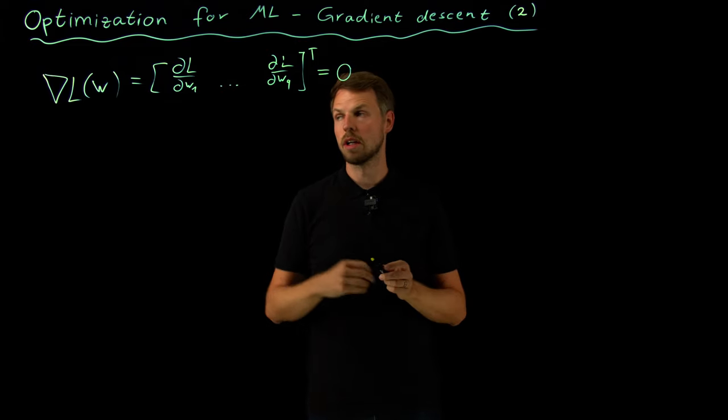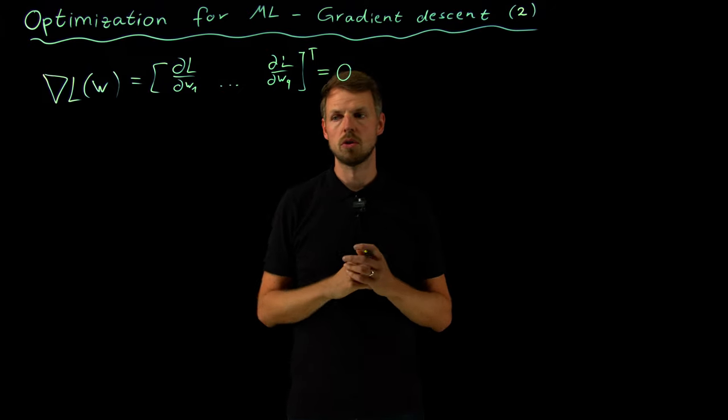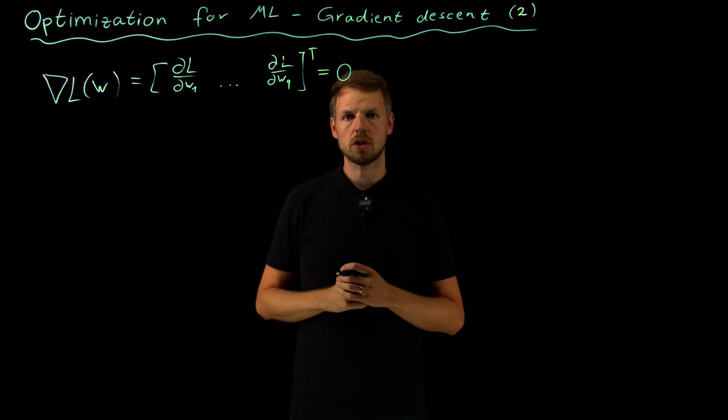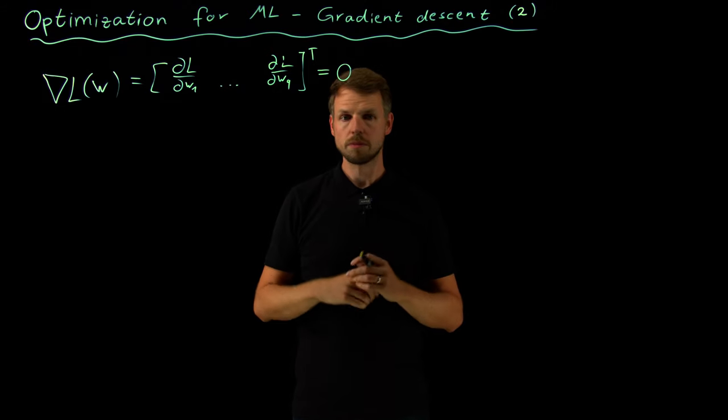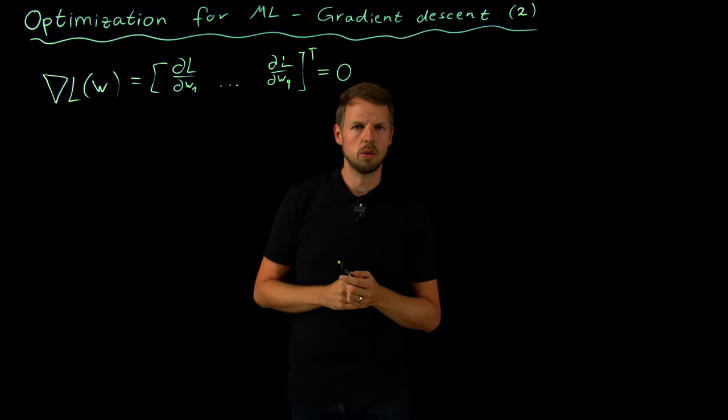So having a global criterion saying that w star, the optimal solution, has a smaller loss function than any other w is a good way to have a global optimum, but it's computationally basically impossible to really do this.